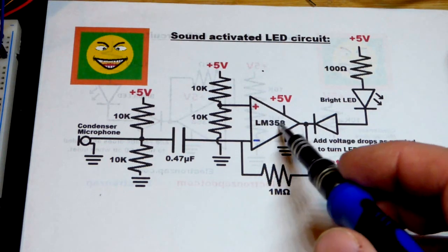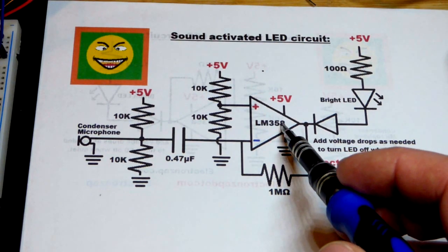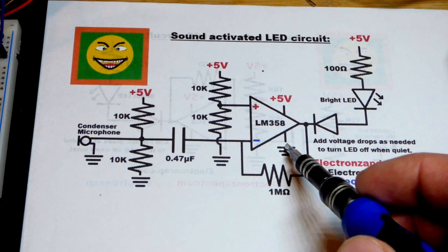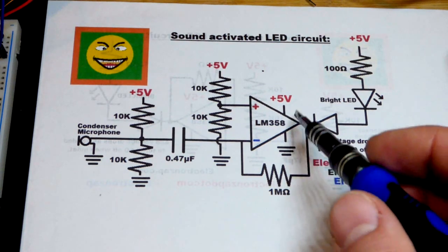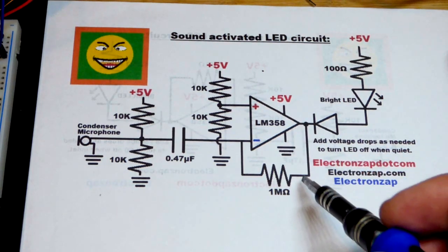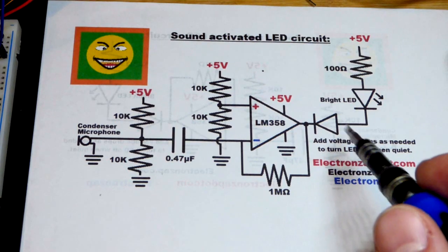But in any case, we're using a single supply LM358, so we can put 5 volts across it, just a single supply. So that's ground, our 0 volt reference point, the negative rail for a single supply.